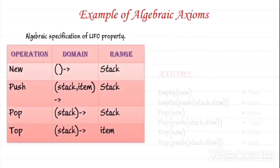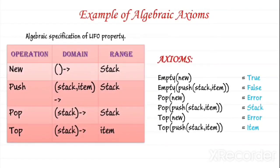Here is an example of algebraic specification of LIFO property, that is last-in-first-out property. Axioms: Empty(new) equals true. Empty(push(stack, item)) equals false. Pop(new) equals error. Pop(push(stack, item)) equals stack.